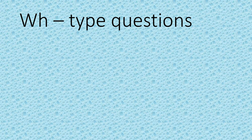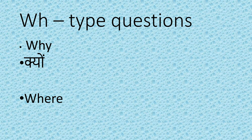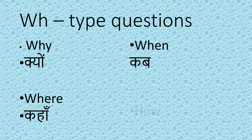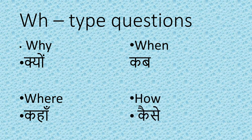Now we come to WH-type questions, which we also call question type 2. In WH-type questions, we use: Why (क्यों), Where (कहाँ), When (कब), and How (कैसे).